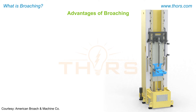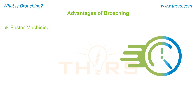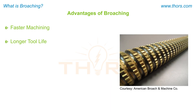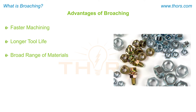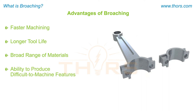Compared to other machining processes, the advantages of broaching include faster machining as both the roughing and finishing cuts are done in one pass, longer tool life as each tooth of the tool passes only once on the workpiece, a broad range of materials can be broached, and the ability to produce difficult to machine features.